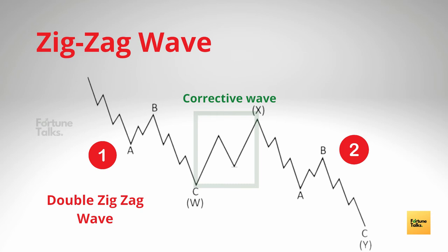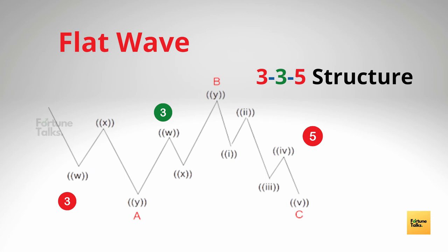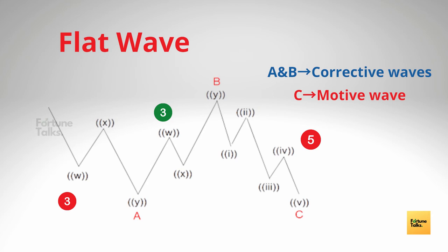The second type of corrective wave is the flat wave. The flat is a three-wave correction in which the sub-waves are formed in a 3-3-5 structure, labeled as an ABC structure. In a flat structure, both waves A and B are corrective and wave C is motive, having five sub-waves. This pattern is known as flat as it moves sideways on technical charts.